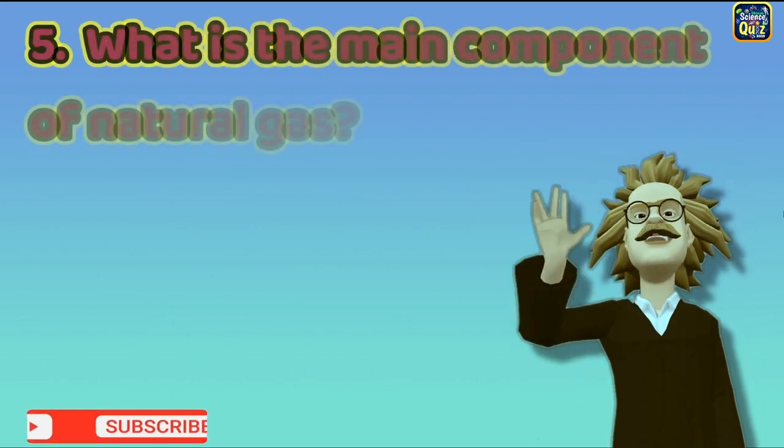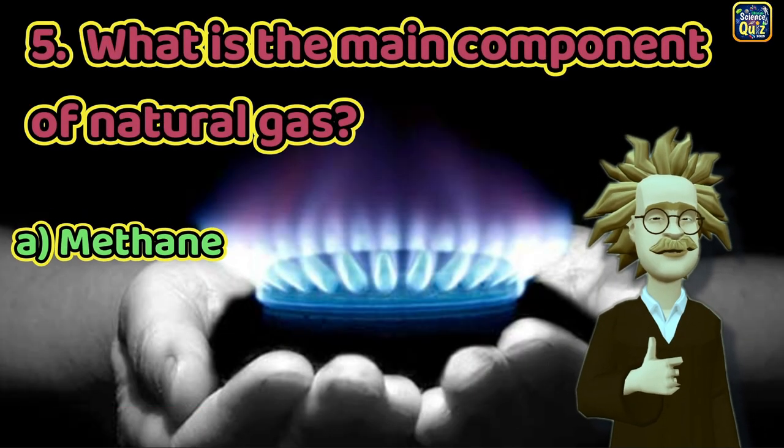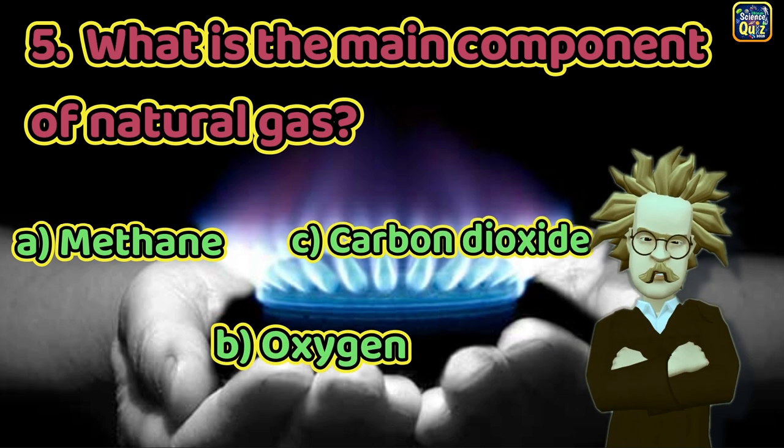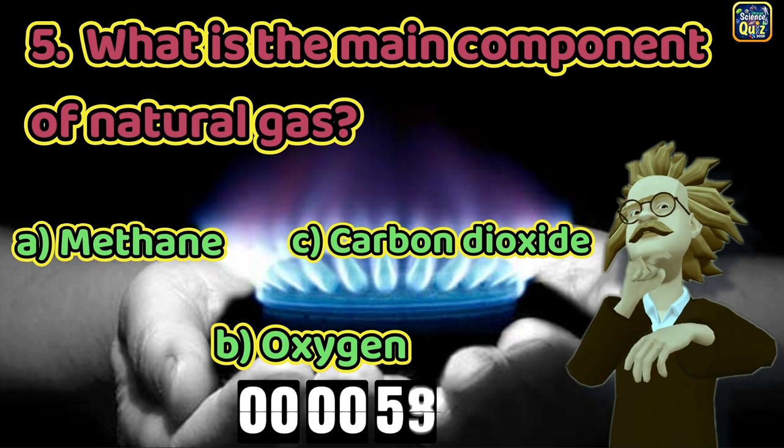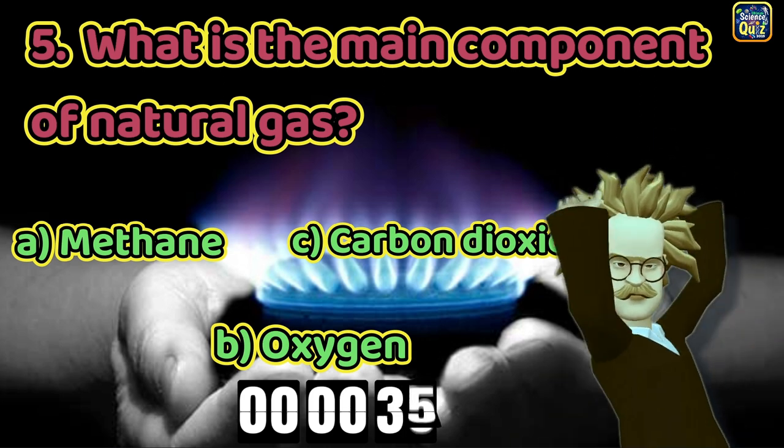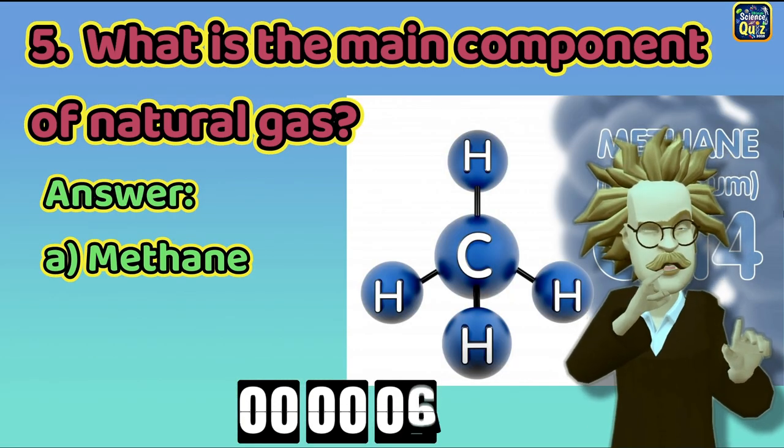Question 5: What is the main component of natural gas? A. Methane, B. Oxygen, C. Carbon dioxide. The right answer is option A. Methane.